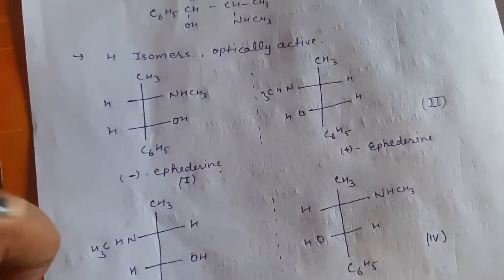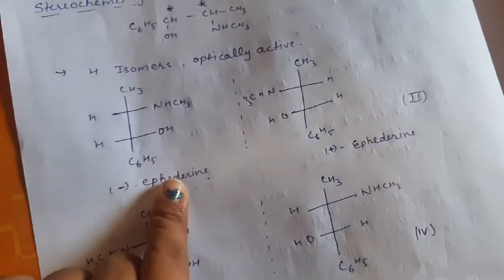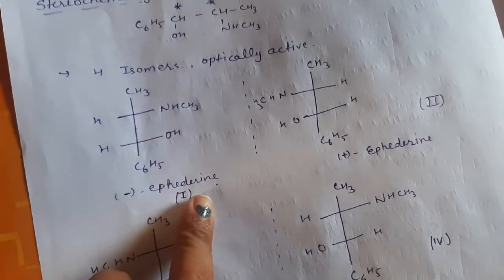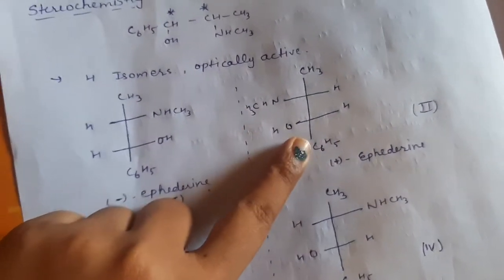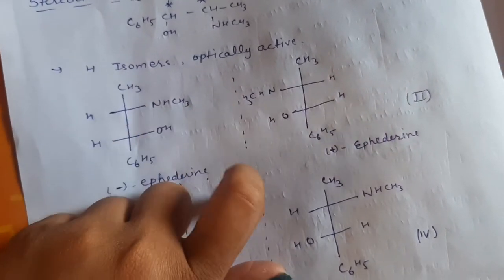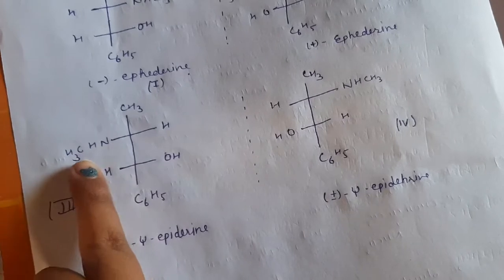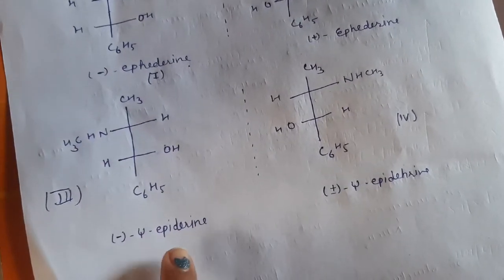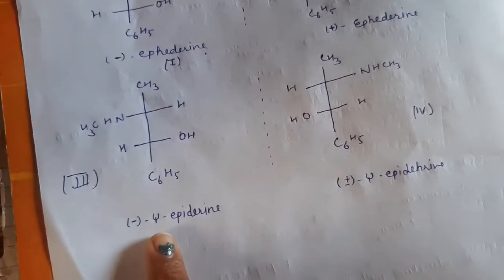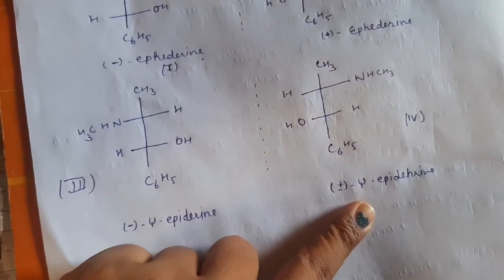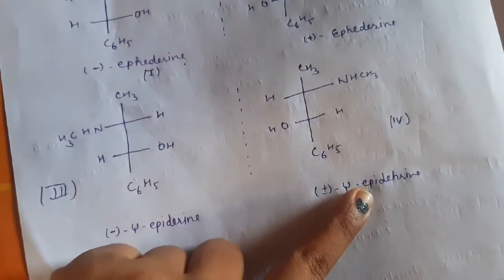And if the OH and NHCH3 group will be on opposite side then we will call it pseudo ephedrine, or if you can see this mirror image then this will be the four isomers of ephedrine.